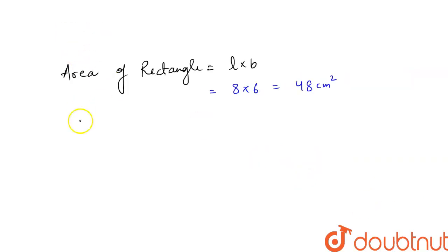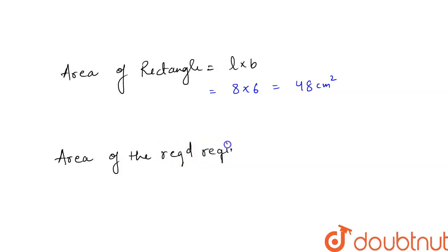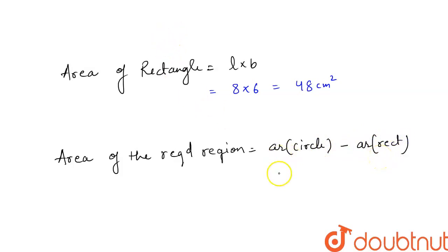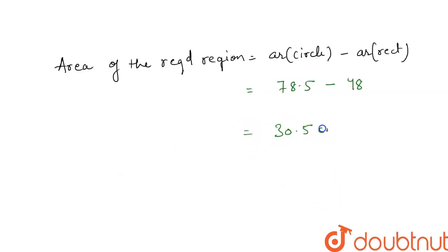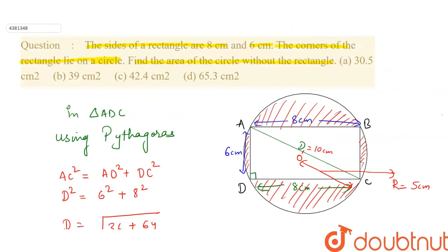So the area of the required region = area of circle − area of rectangle = 78.5 − 48 = 30.5 cm². Checking the options, the first option is 30.5 cm². I hope you understood this question. Thanks for watching this video.